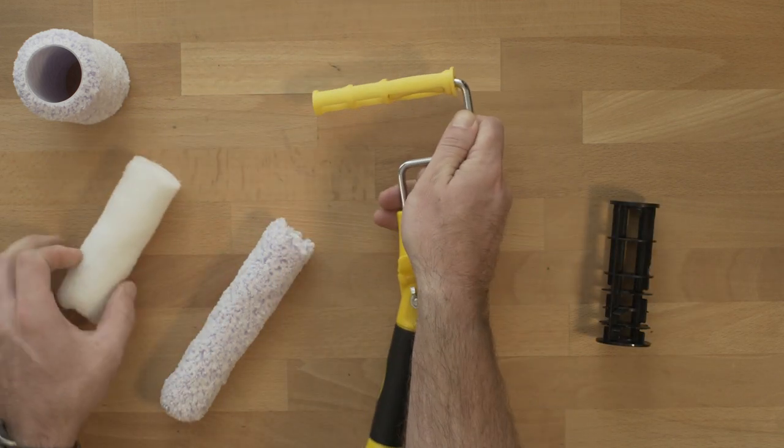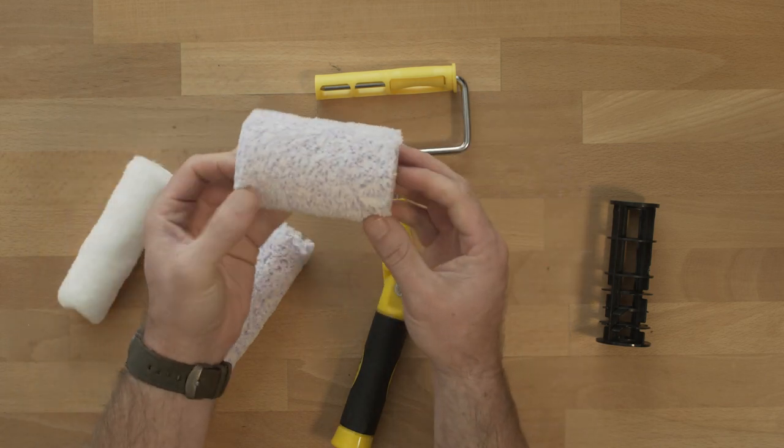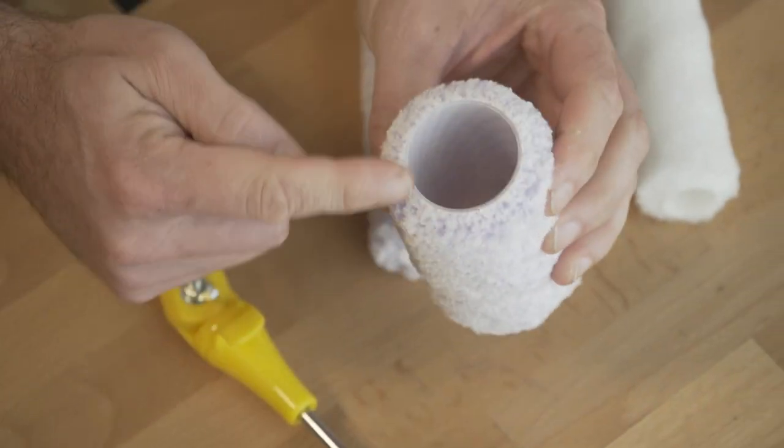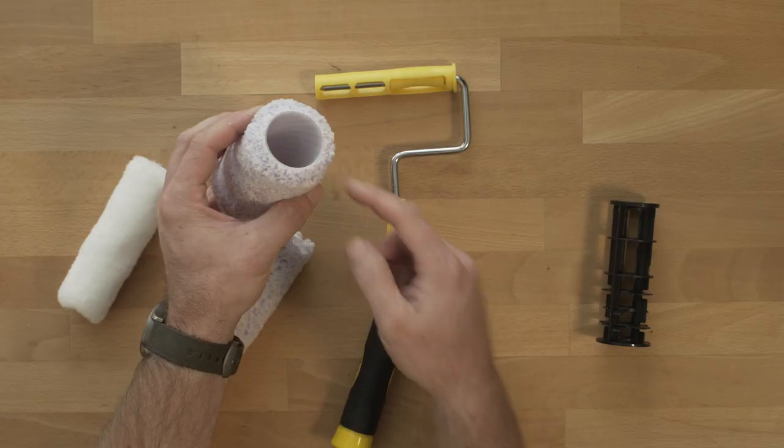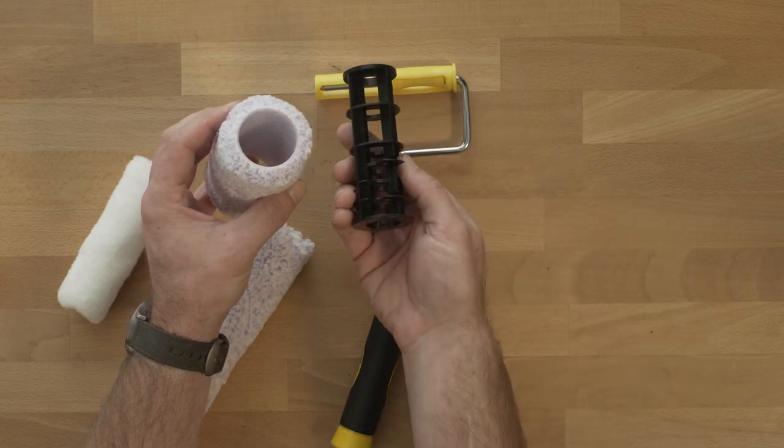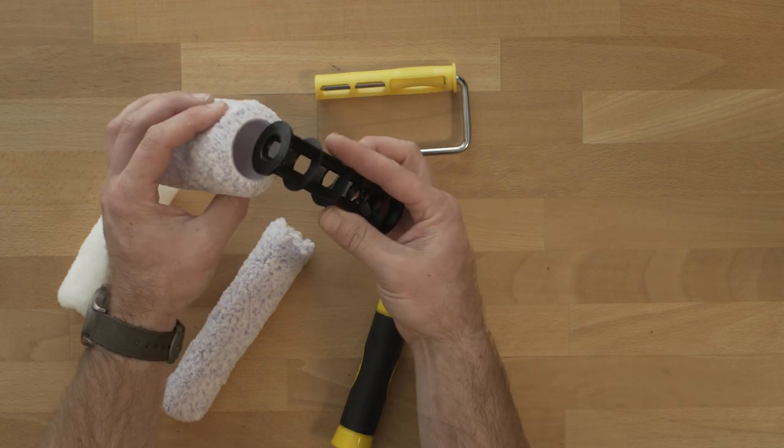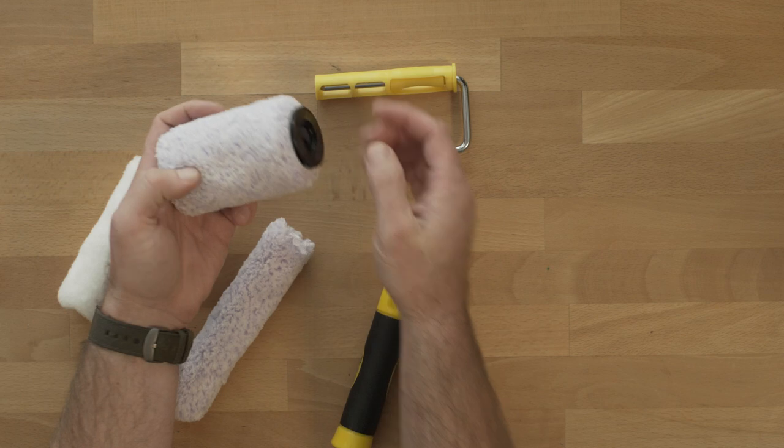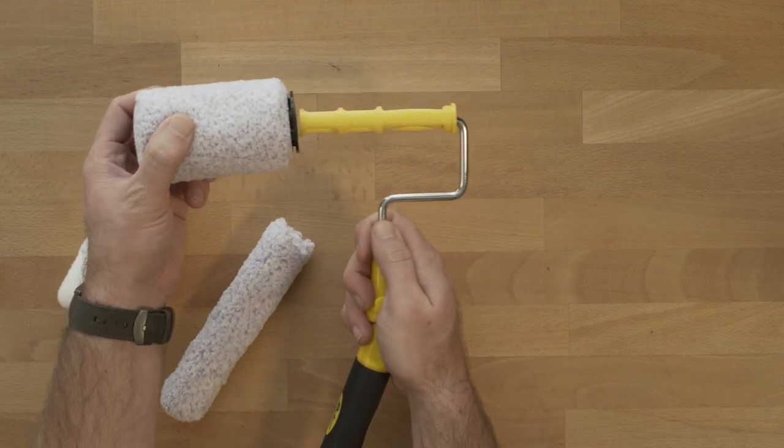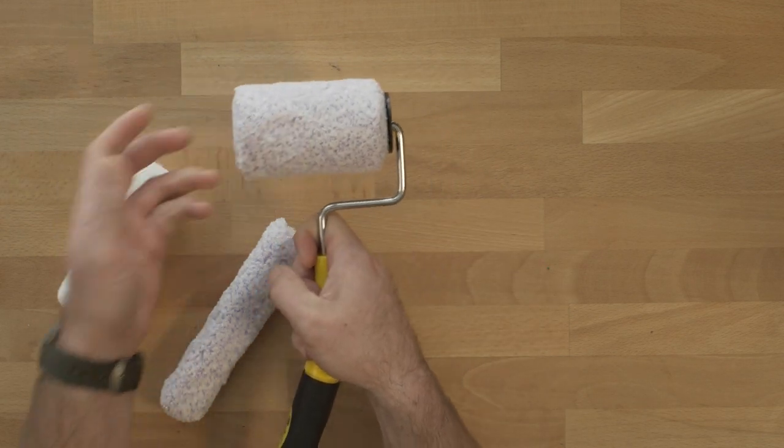Lastly, we have an adapter for the four-inch rollers that you would find on the market with this one and a half inch core. We're going to take our black adapter that comes with the kit and pop that into our four-inch core, and now this entire unit slides onto the yellow adapter.